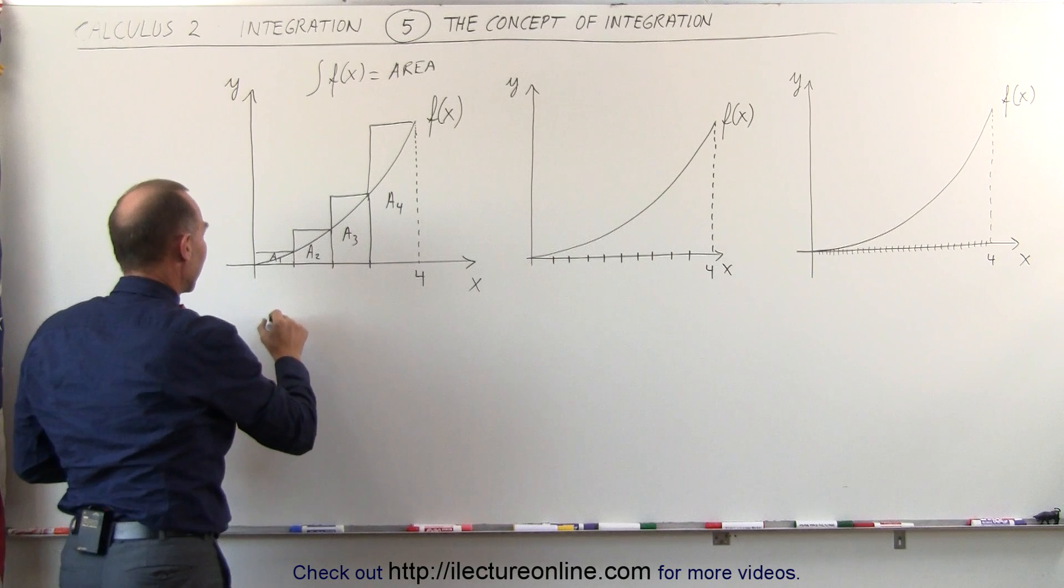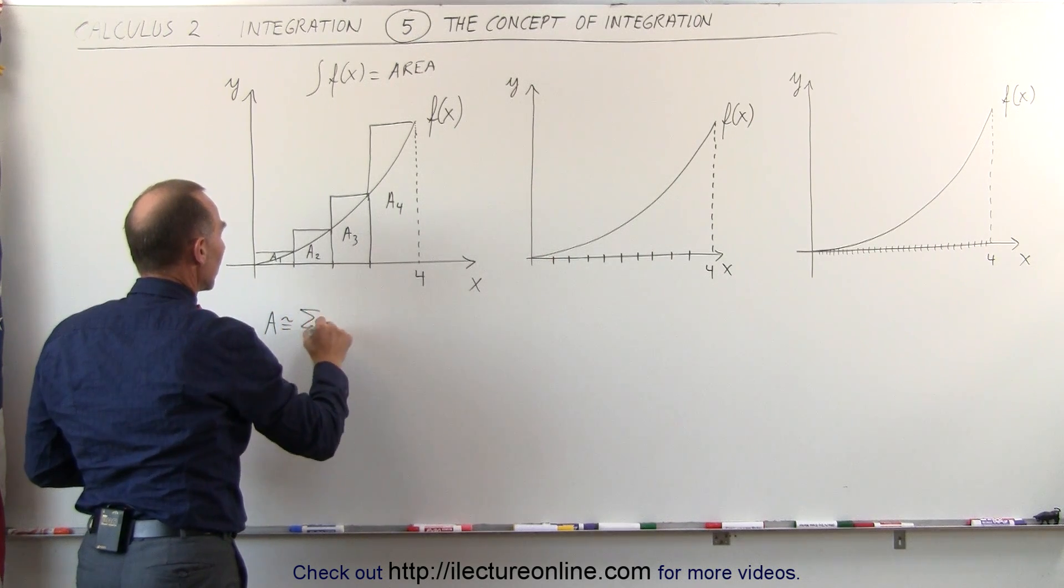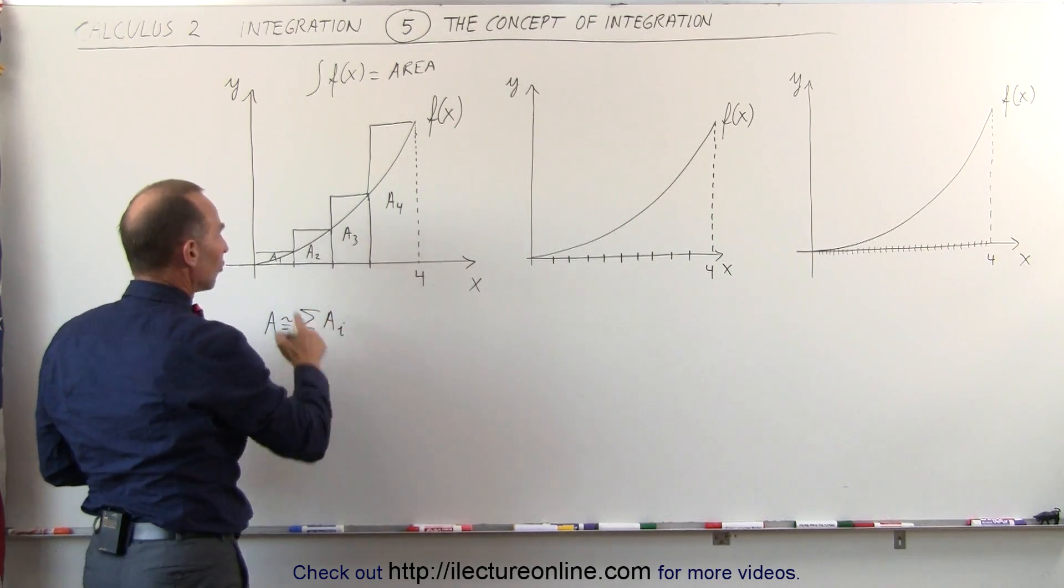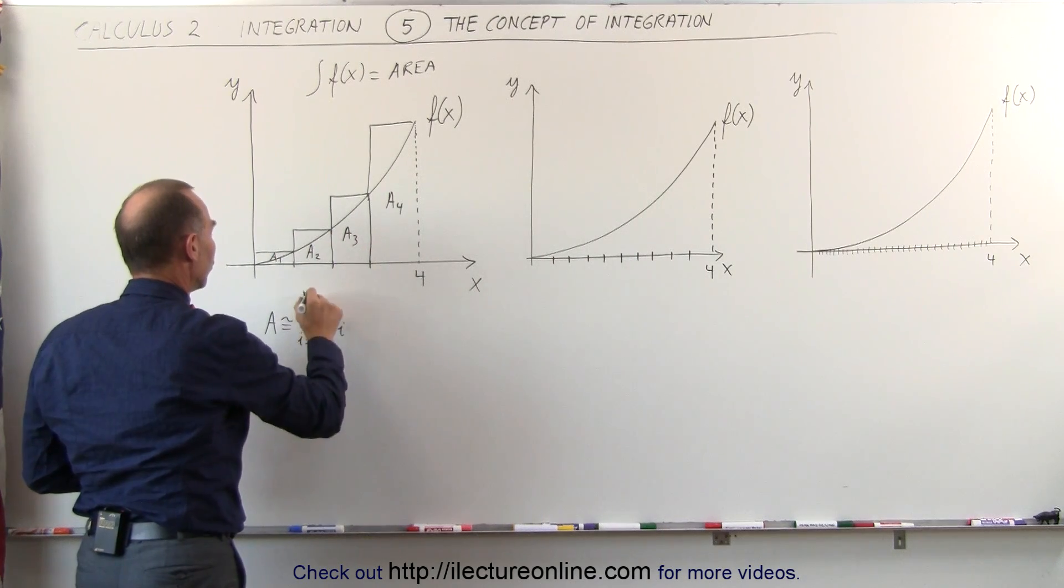I can say then that the area is approximately equal to the sum of all the areas, and in this case there's 4 sections, so from i equals 1 to 4.